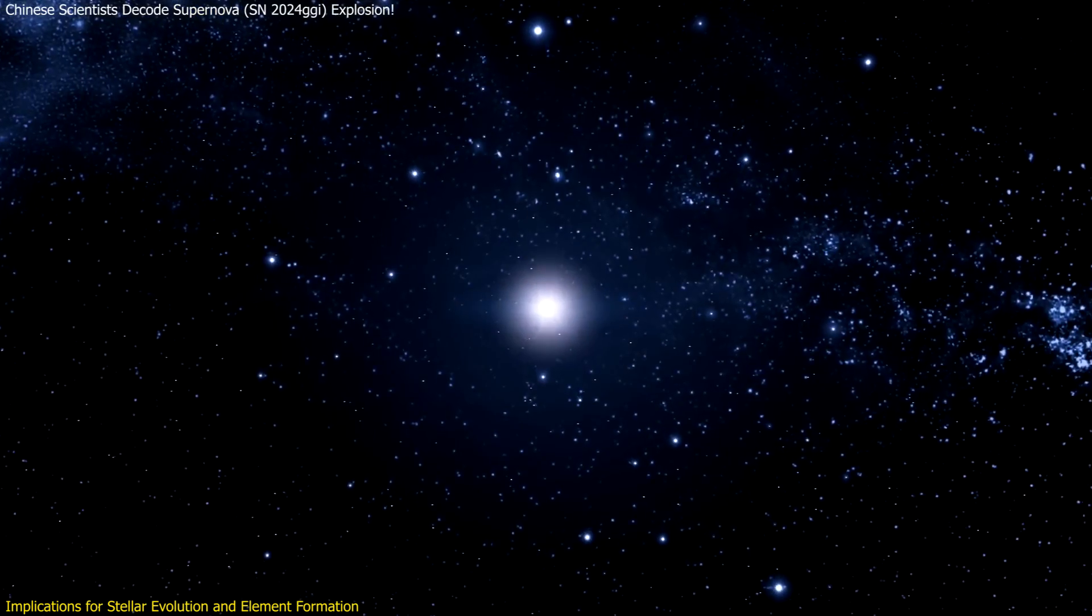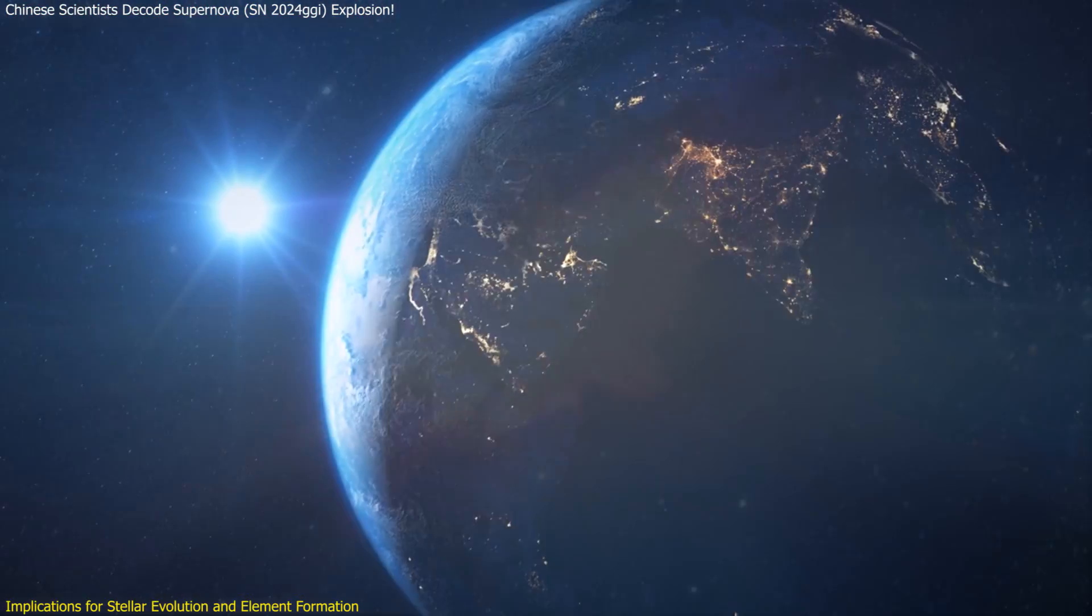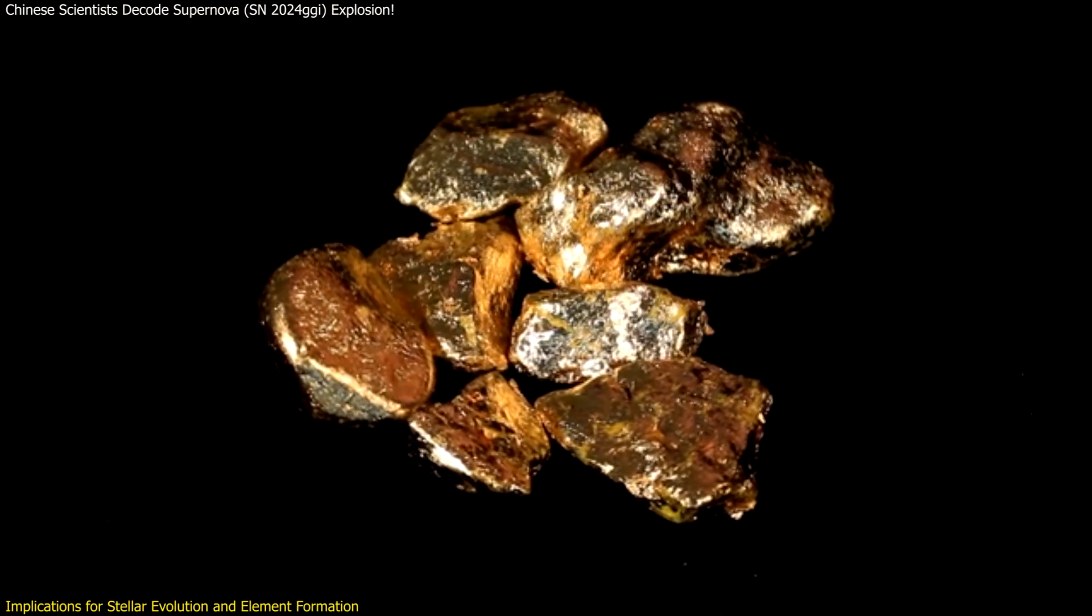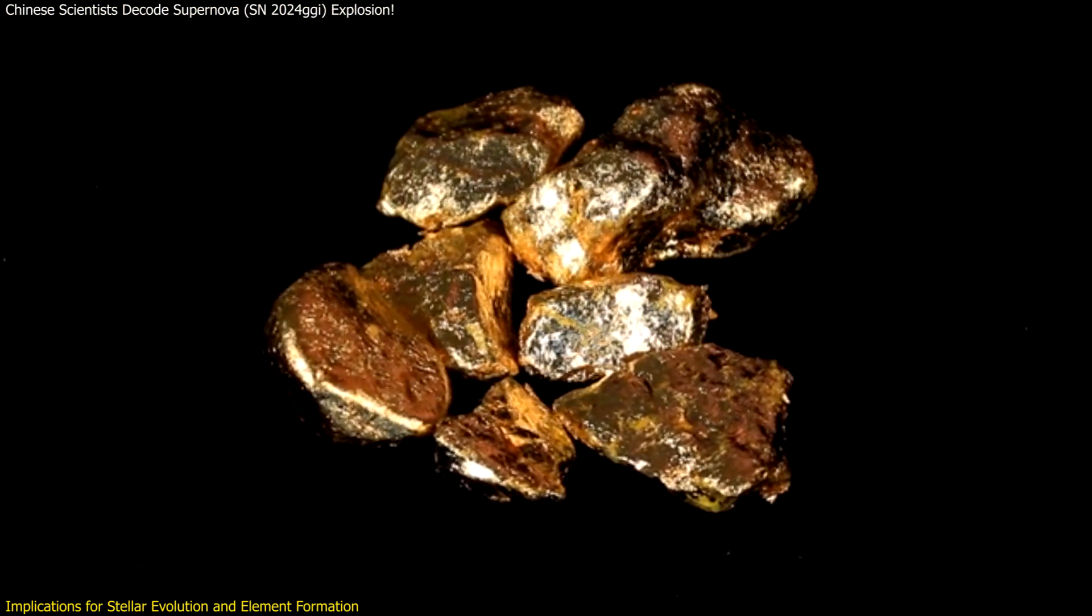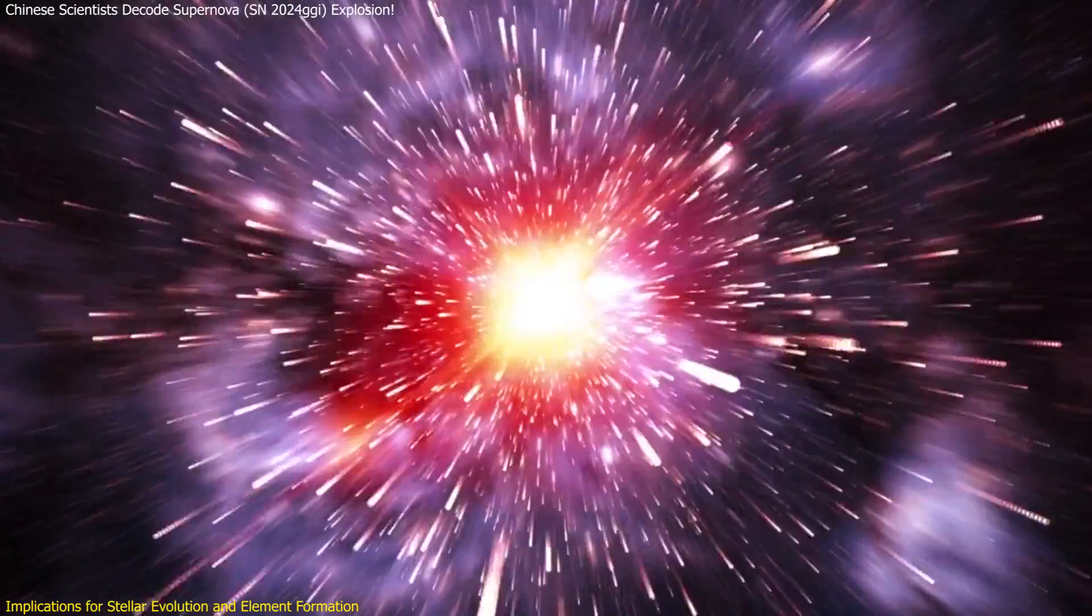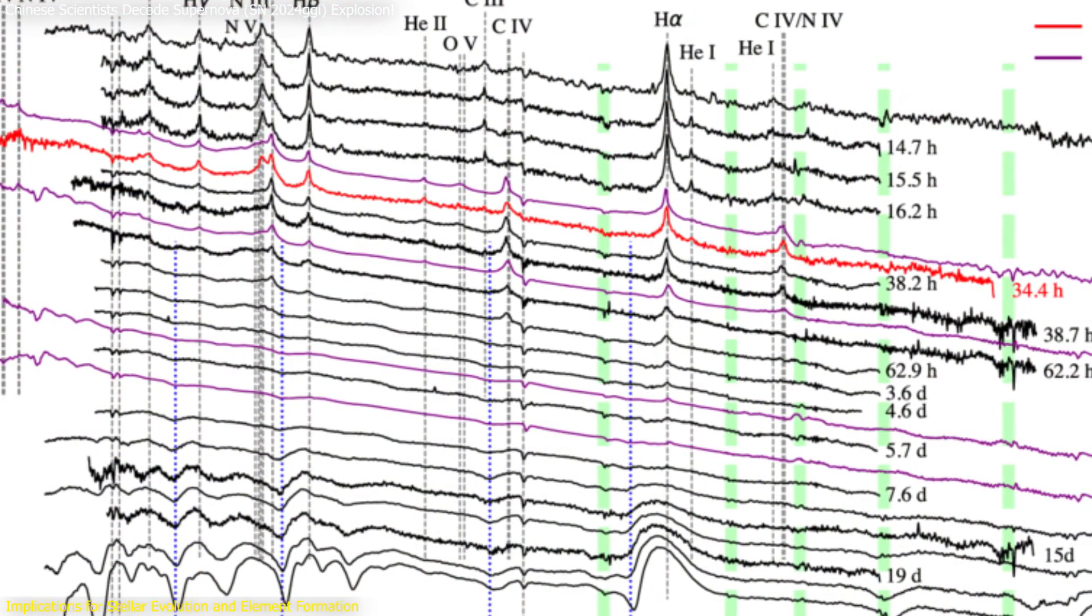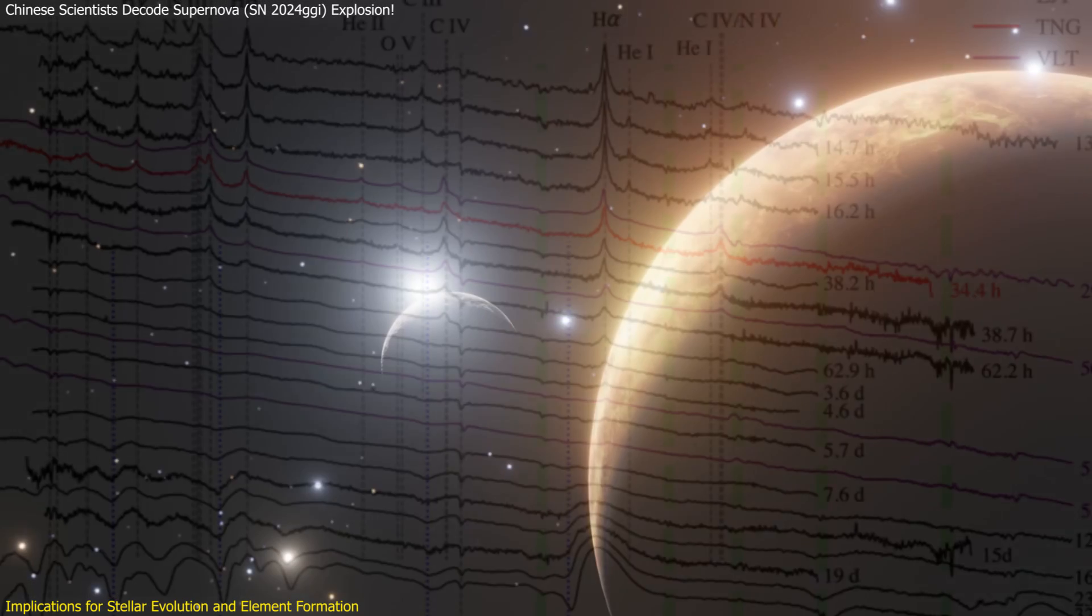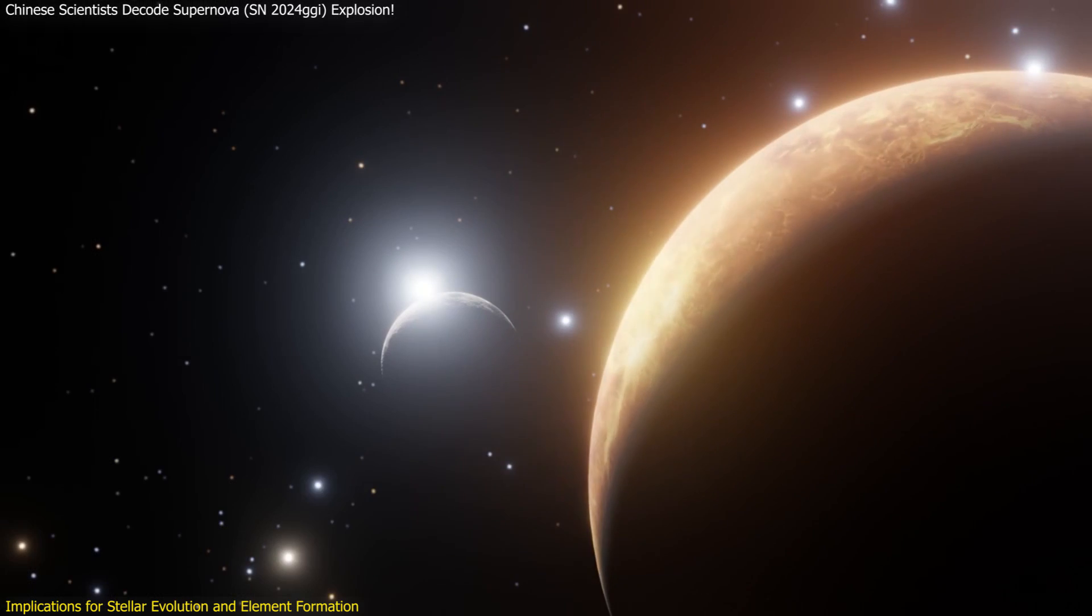Furthermore, this research underscores the interconnectedness of cosmic events and the formation of the elements we find on Earth. Gold, for instance, is not just a precious metal but a product of stellar death, a cosmic fragment that tells the story of the universe's violent and creative processes. The shock breakout data also provides a clearer picture of the environments where these elements form, helping scientists understand the diversity of planetary systems.